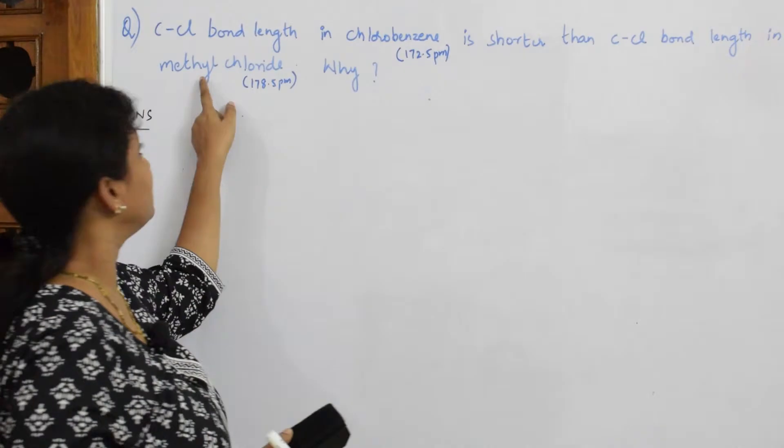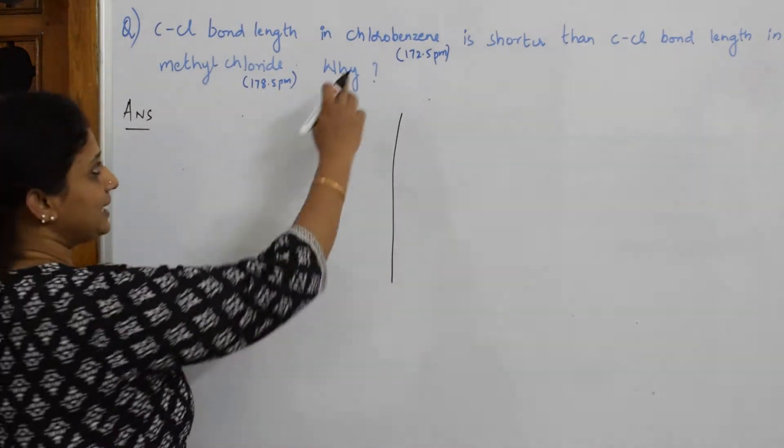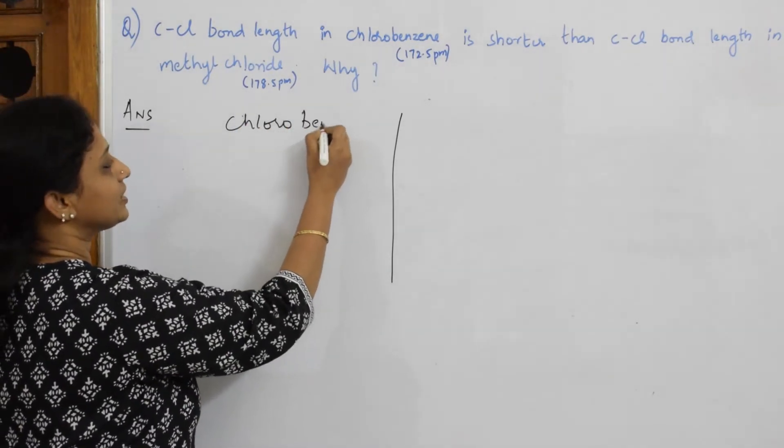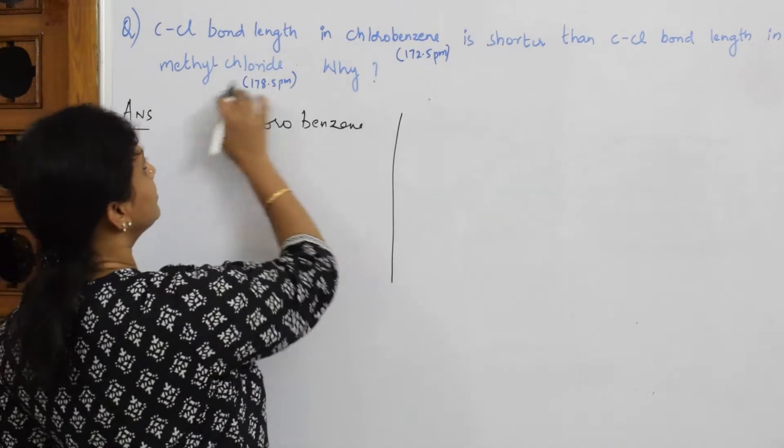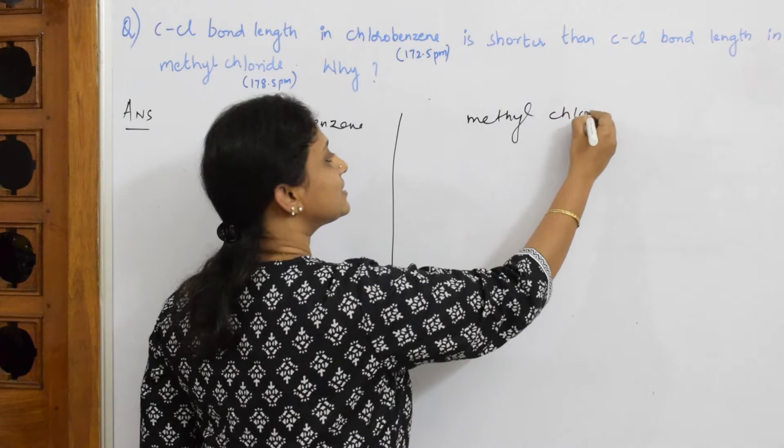So let me just divide the board into two and let me write chlorobenzene here. Now one more compound given to us is methyl chloride.